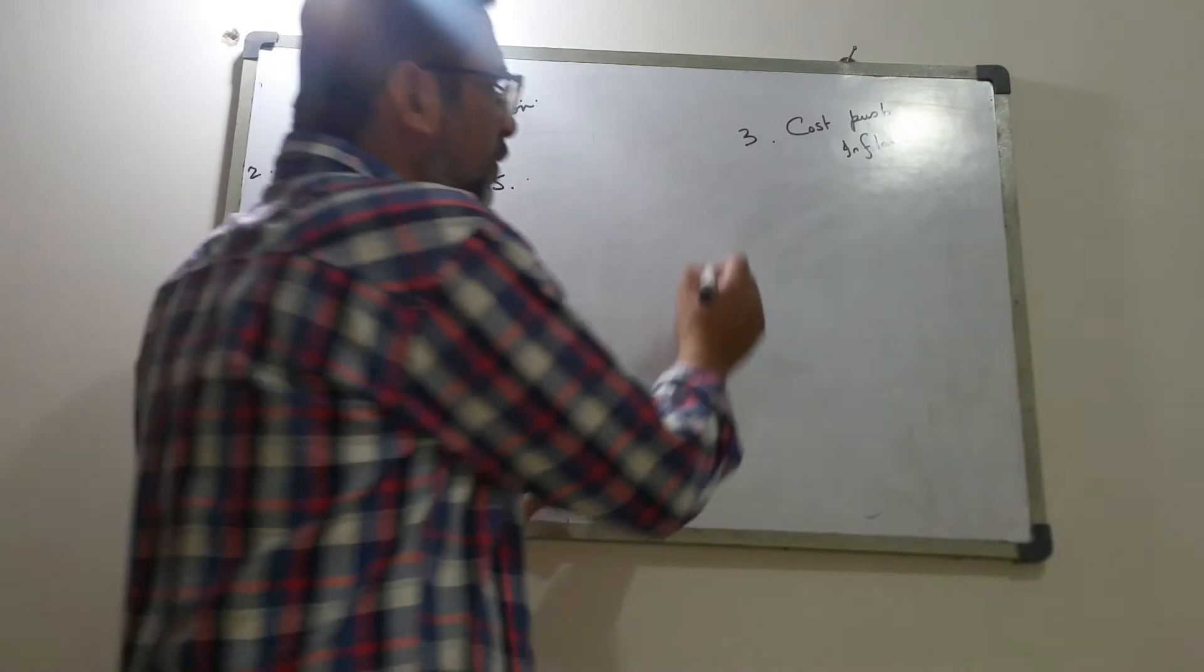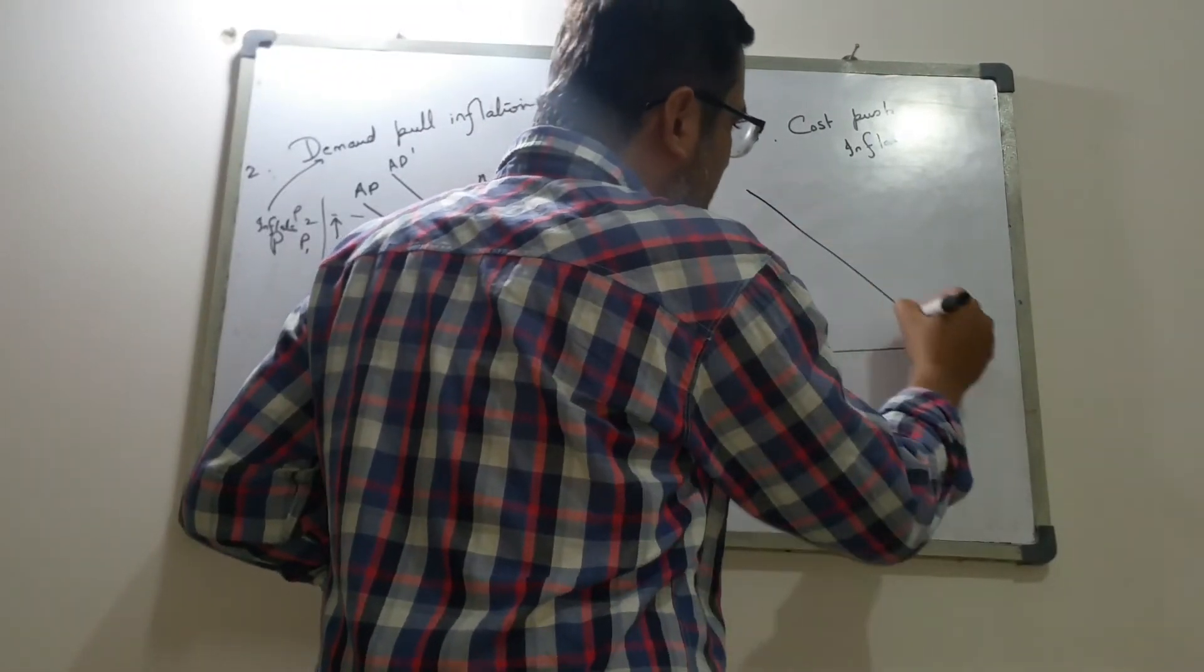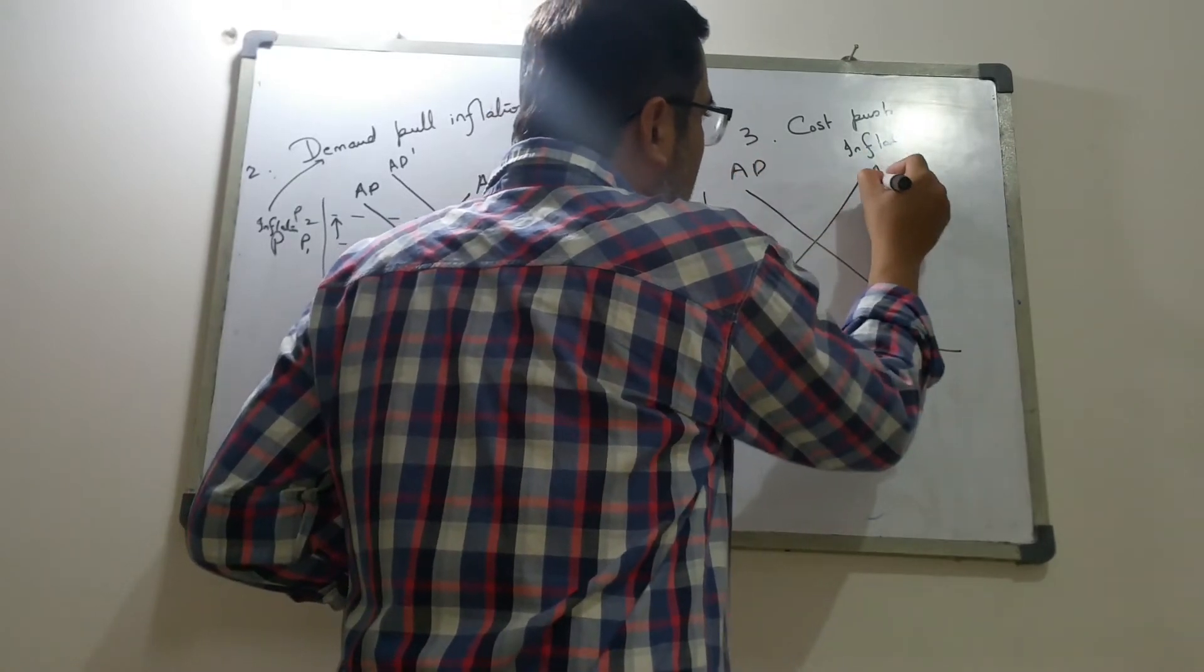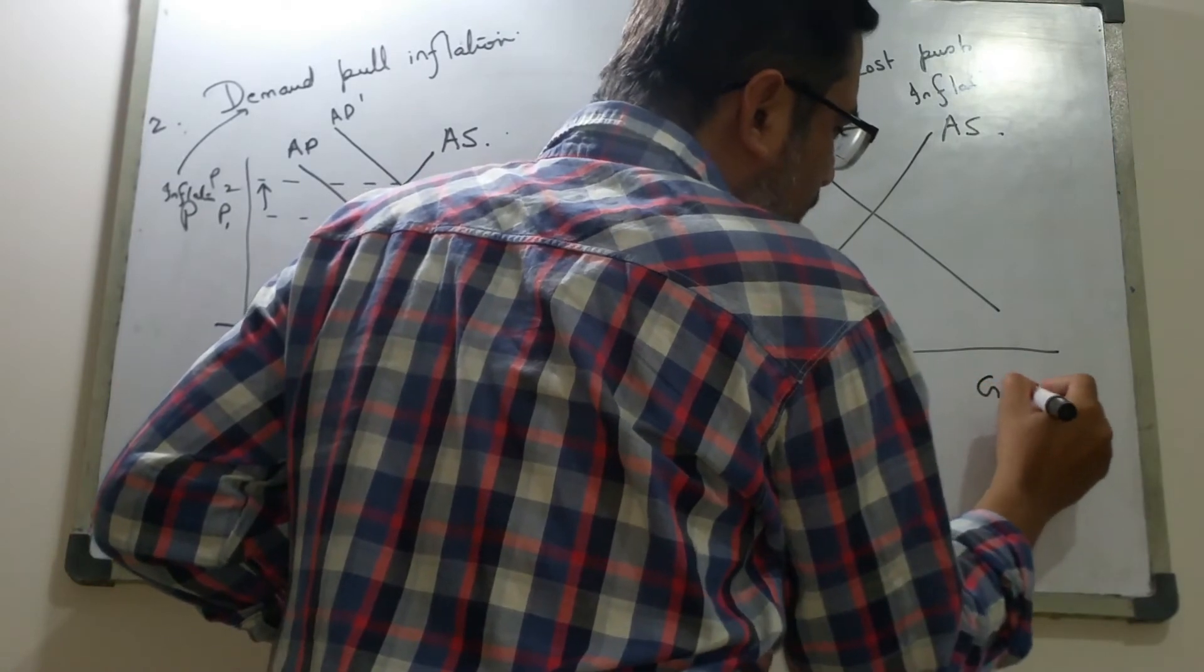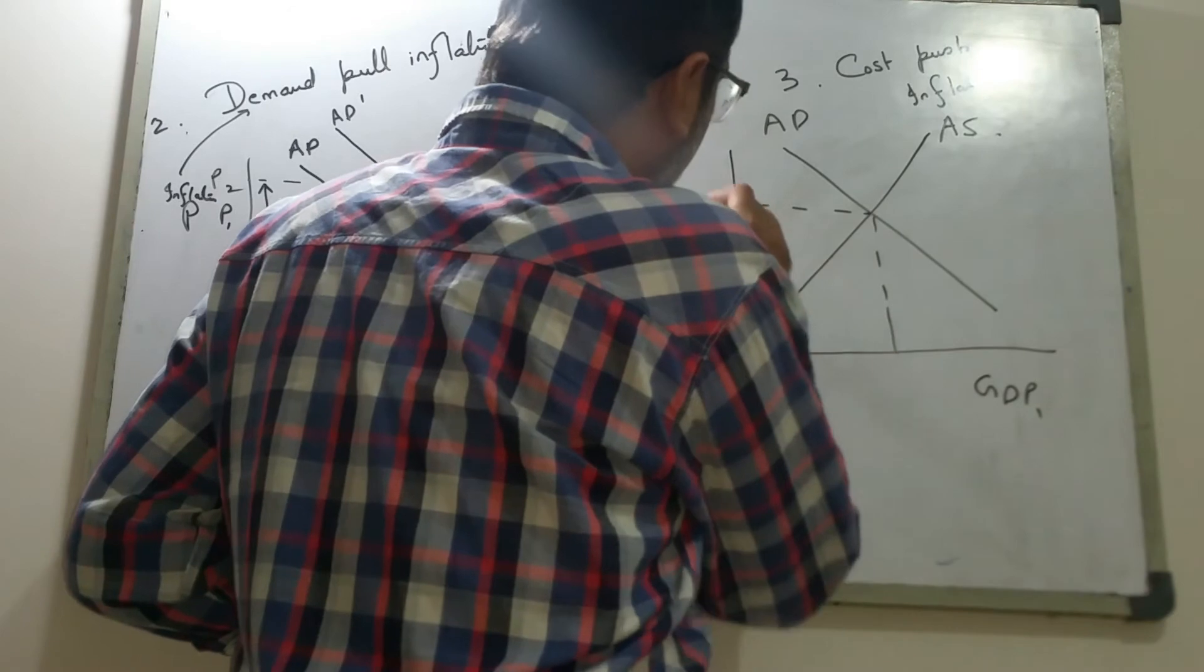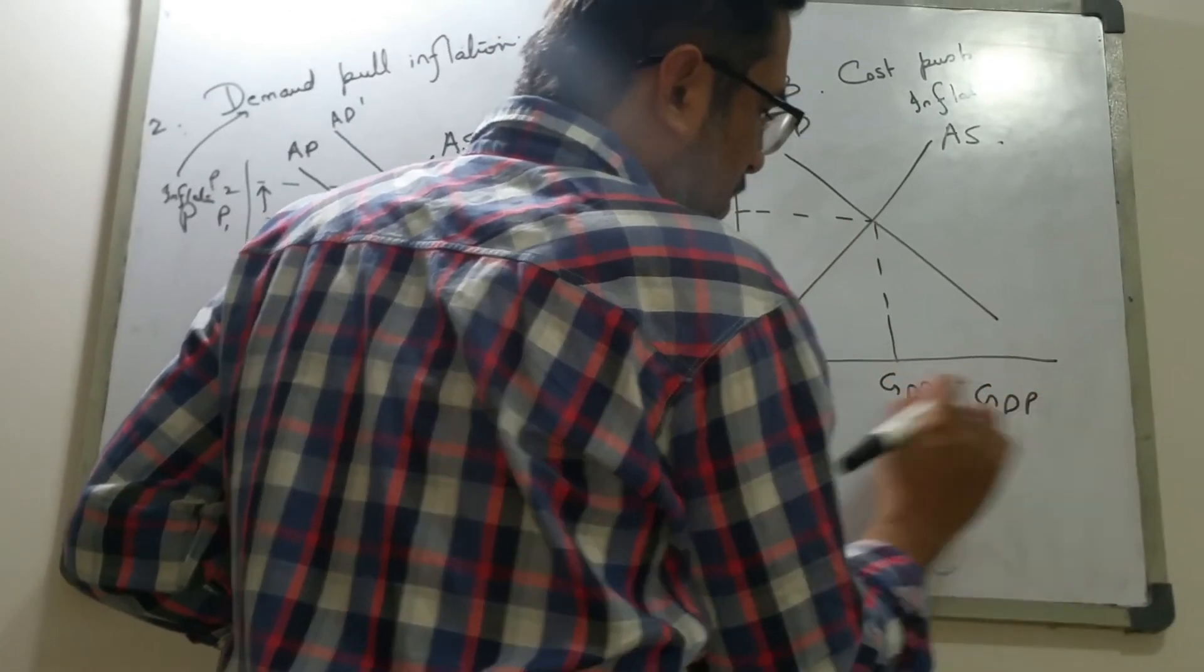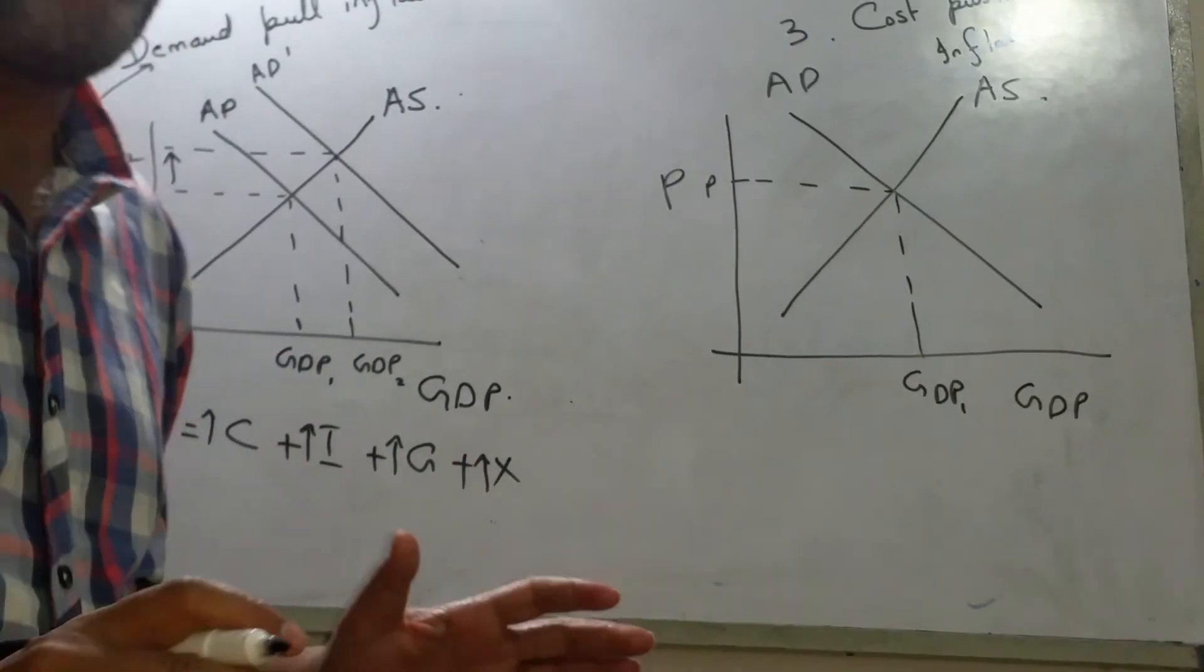But then we have another form of inflation in which basically we combine the worst of both worlds. And this is aggregate demand and aggregate supply. And once again we have the GDP here, and this is the price. And this is the GDP, GDP one. And what happens here, here the economy is not performing well.